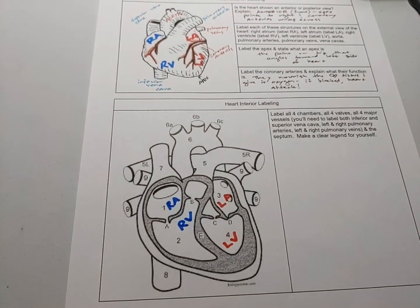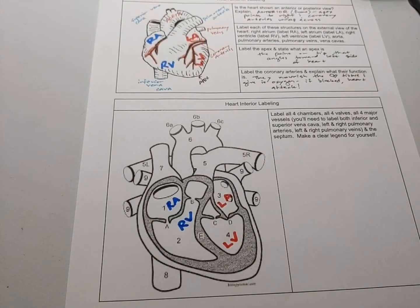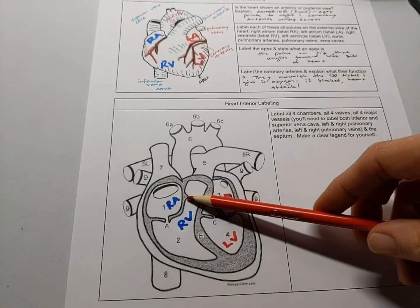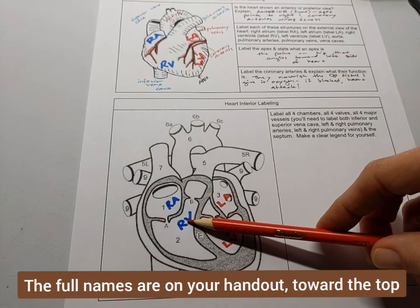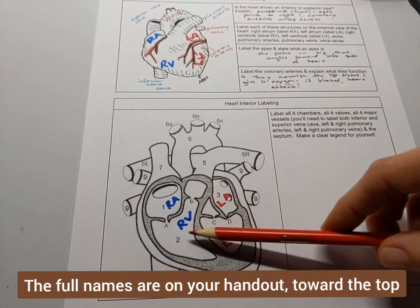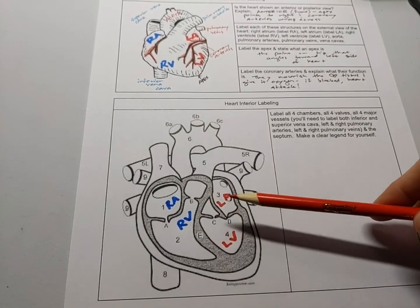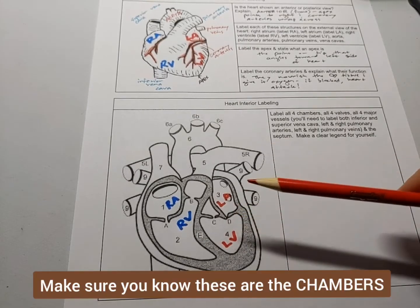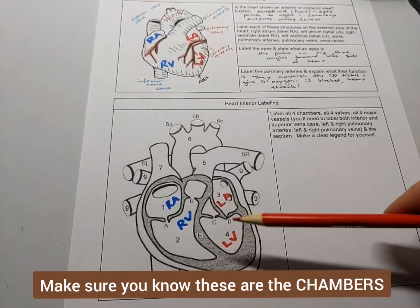I've just used the shortened form for each of the chambers. So LA is left atrium, LV left ventricle, RA right atrium, and RV right ventricle. And these are the chambers of the heart. Humans have a four-chambered heart, so do sheep, which is the kind of heart that we'll be dissecting. Animals like deer do as well.